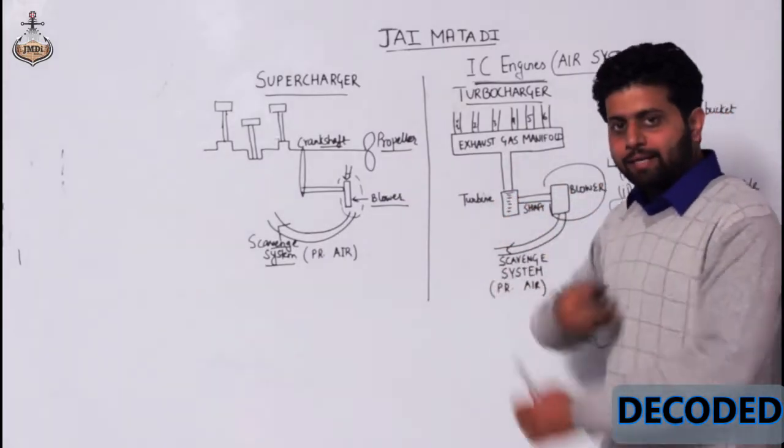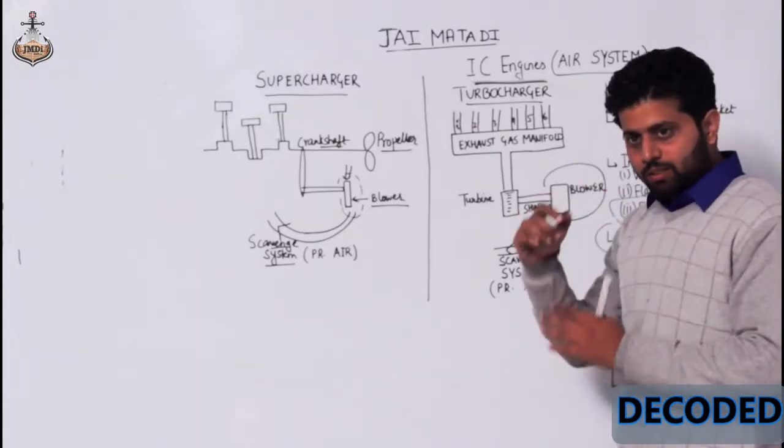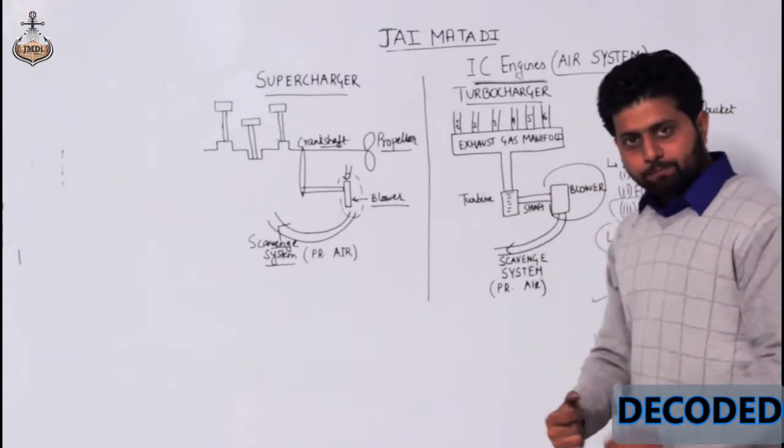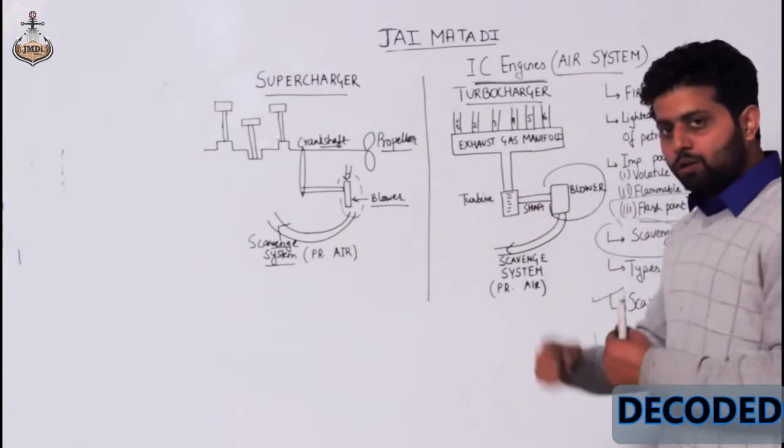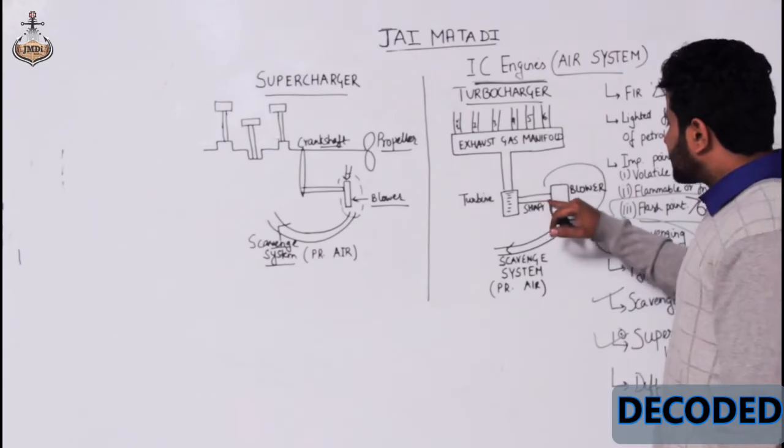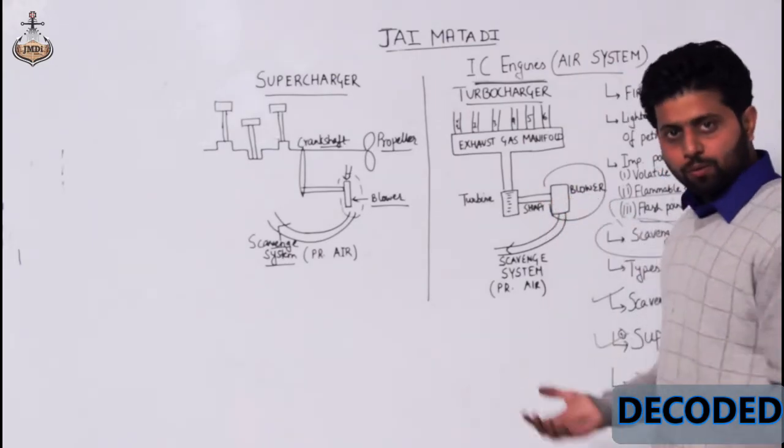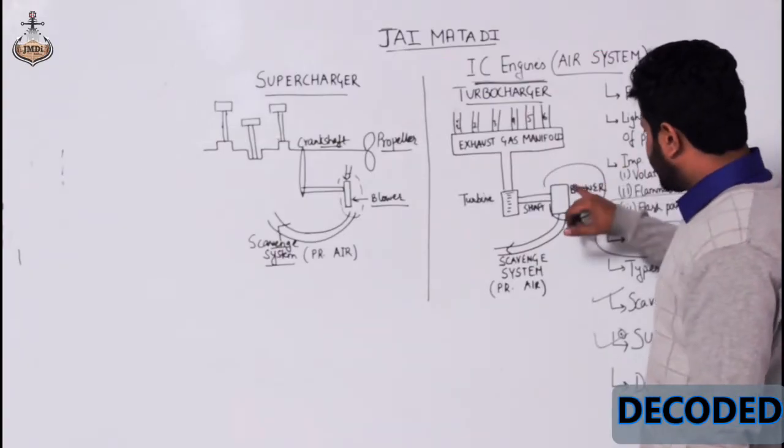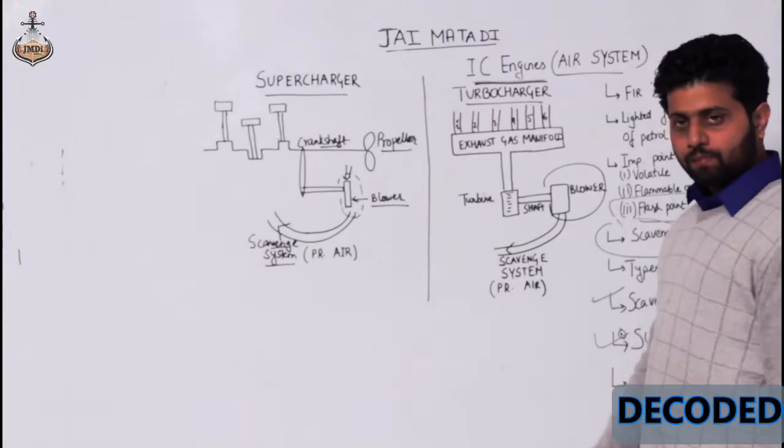When this strikes a turbine, the nozzles, the turbine starts rotating. The turbine starts rotating, it is connected to a shaft, the shaft also rotates, and then this shaft is further connected to a blower, a centrifugal blower. Right, so it sucks in air, pressurizes it, and sends it into the engine.